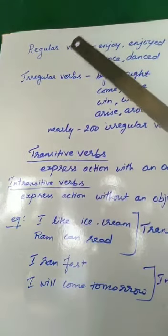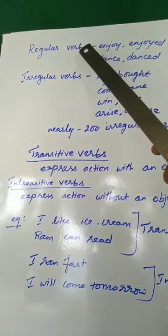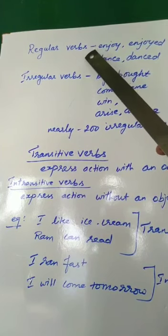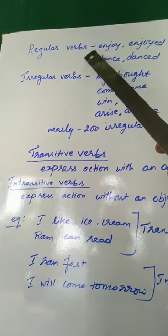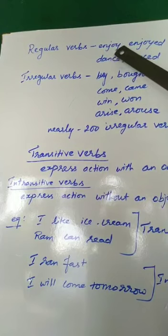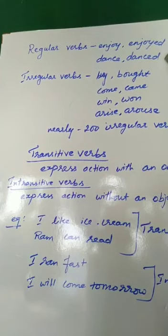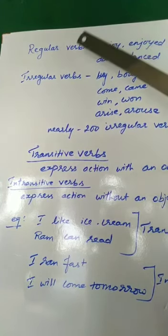Now let us learn about regular verbs and irregular verbs. What are regular verbs? When -ed or -d is added to a main verb, it is called a regular verb. For example: enjoy — enjoyed (ed is added). Dance — danced (d is added). So when only -ed or -d is added to change to past tense, it is called a regular verb.